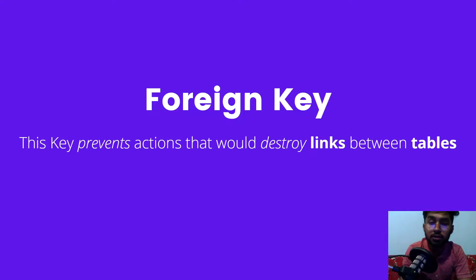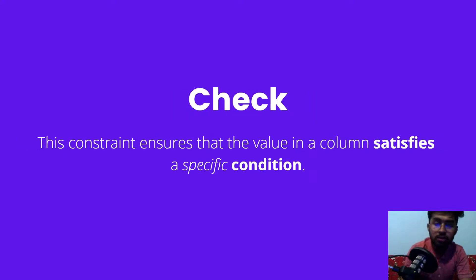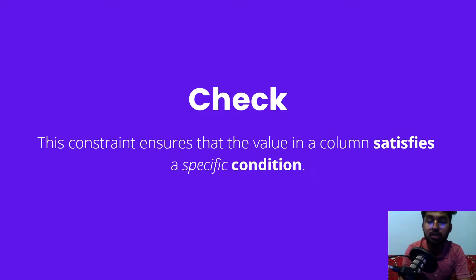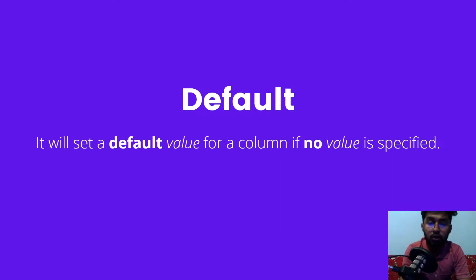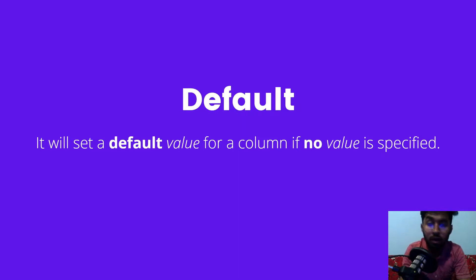FOREIGN KEY prevents the actions that would destroy the links between different tables. CHECK constraint ensures that the value in a column must satisfy a specific condition that we have given. DEFAULT — if there is a null value in a column, you can use the default value.